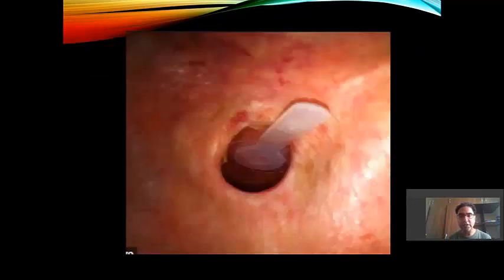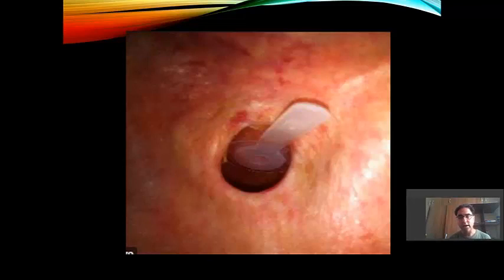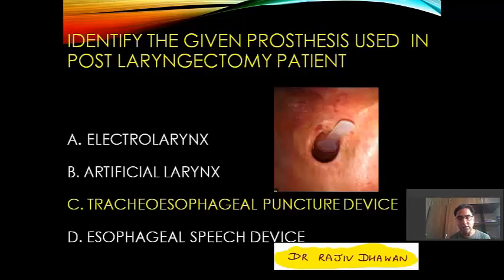This patient has undergone total laryngectomy. After total laryngectomy, we make a permanent tracheostomy. So you are seeing the hole — the circular thing — which represents the permanent tracheostomy opening, and through that you are seeing a device jutting out which is sticking onto the posterior wall of the trachea. So the answer to this question is the tracheoesophageal puncture device — TEP device.